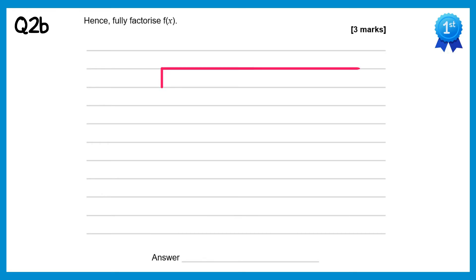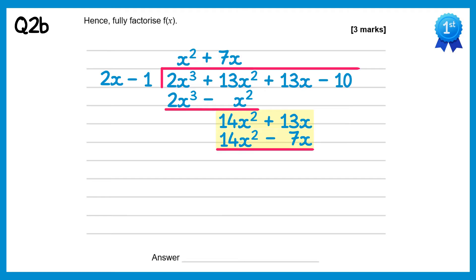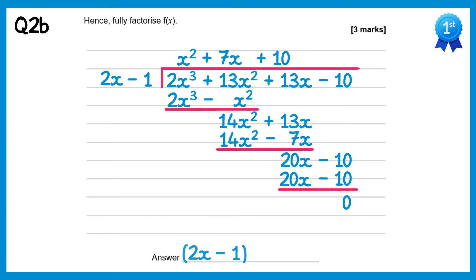For part b we need to factorise, so we'll take the polynomial and divide it by the factor. 2x cubed divided by 2x is x squared. Multiply this back through: we get 2x cubed take away x squared. Subtract these — the 2x cubes will cancel and 13x squared take away 1x squared is 14x squared. Bring down the next term. 14x squared divided by 2x gives you 7x. Multiply back through: 7x times 2x is 14x squared and 7x times negative 1 is negative 7x. Subtract — the 14x squared cancel and 13x take away negative 7x is 20x. Bring down the final term. 20x divided by 2x is plus 10, multiply back through: 20x take away 10, which when you subtract gives 0. So we've found this is the linear part times the quadratic part, and this quadratic can further factorise to x plus 5, x plus 2.